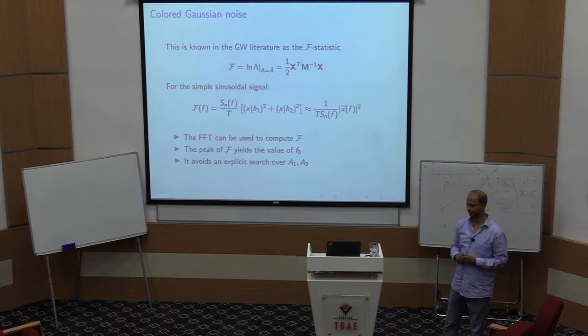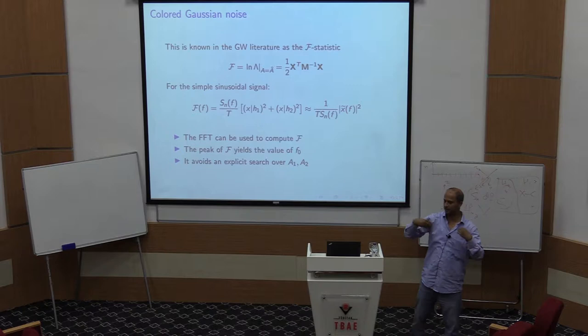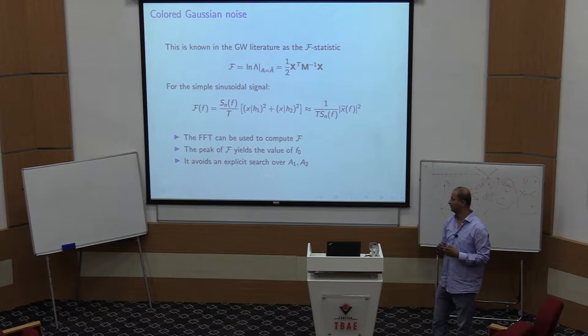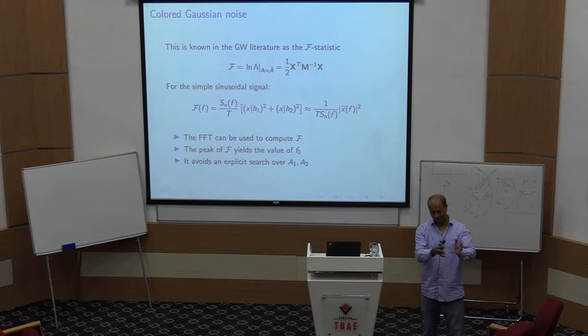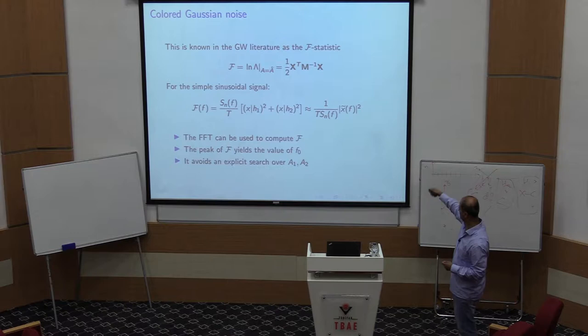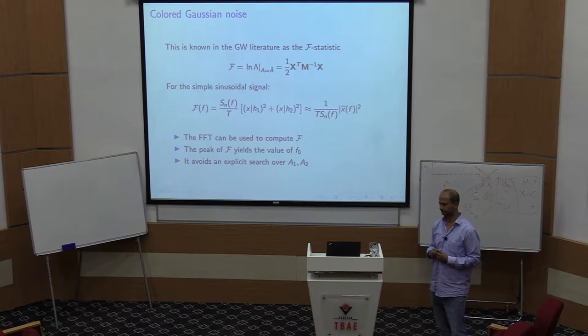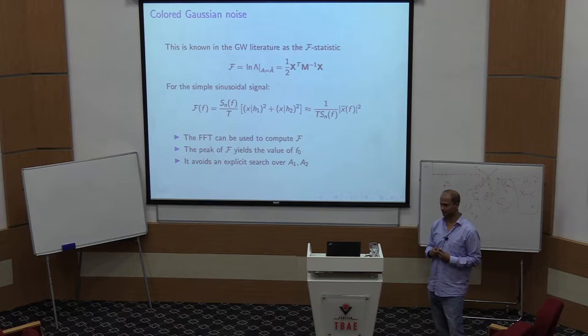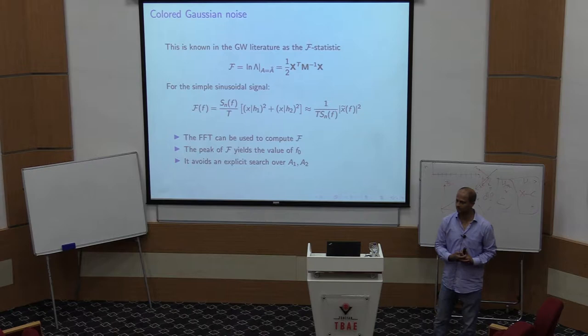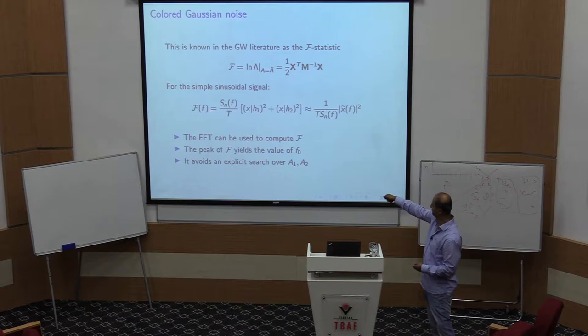Even without knowing anything else, if you have data and expect a sinusoidal signal, you would just do a Fourier transform and find where it peaks — and that is exactly what this analysis tells you. It also gives you amplitudes A1, A2, the amplitude A and initial phase φ₀. The pre-factor tells you how loud the signal is: the smaller the noise, the larger the significance. To recap: we computed the likelihood ratio motivated by Neyman-Pearson criteria, applied it to the sinusoidal model, and arrived at the f-statistic via the FFT.